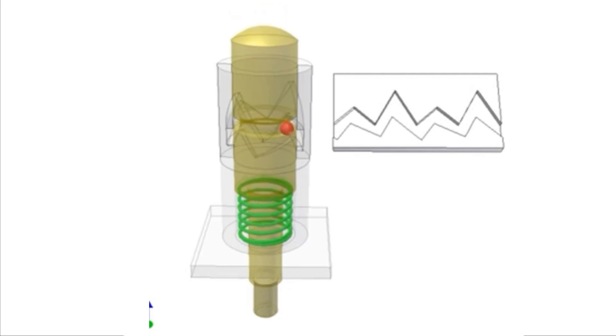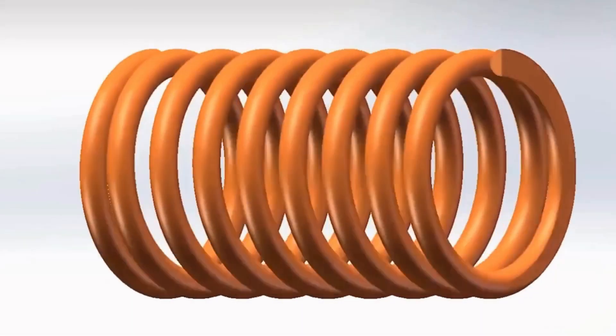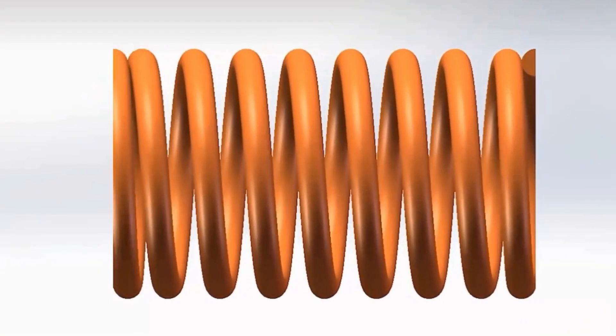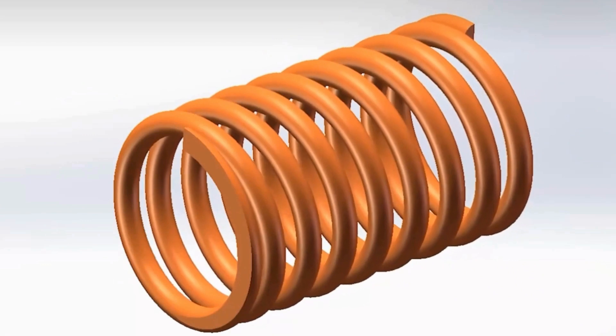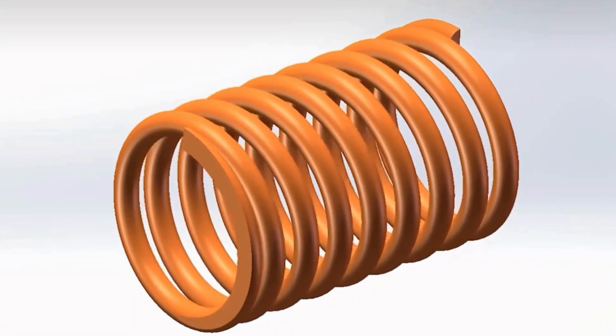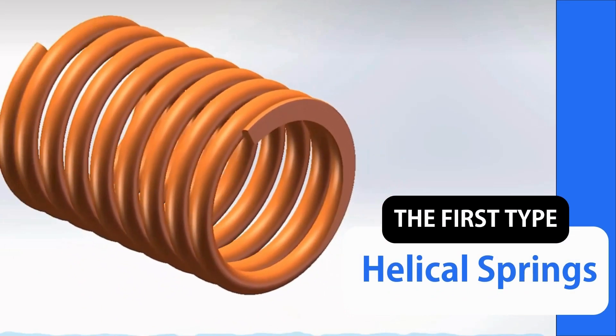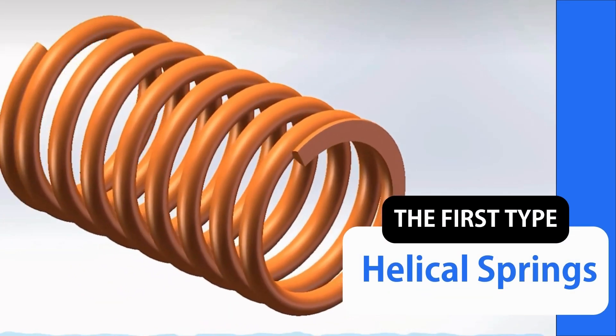Ever used a pen? That satisfying click, that snap, is thanks to a helical spring. It is made by winding a metal wire into a spiral shape, called a helical or coil spring. It's the most common type of spring you'll encounter. Like DNA, helical springs aren't just a one-size-fits-all deal. They come in a variety of subcategories.